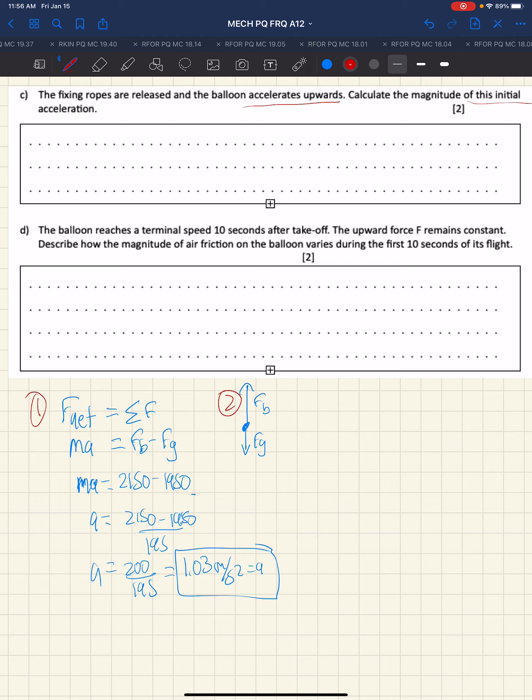Question d: reaches a terminal speed. Terminal speed means the acceleration equals zero, therefore the net force equals zero. It takes 10 seconds to do that. The upward force remains constant, so fb remains 2150.